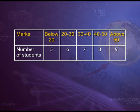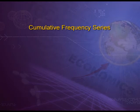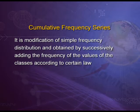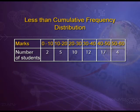For example, in a table of marks and number of students, it may be written as 'below 20' at the start and 'above 50' at the last — that means we are talking about an open end series. The next one is cumulative frequency series. It is a modification of simple frequency distribution and is obtained by successively adding the frequencies of the values of the classes according to a certain law. It can move from top to bottom or from bottom to top. This is an example of less than cumulative frequency distribution.